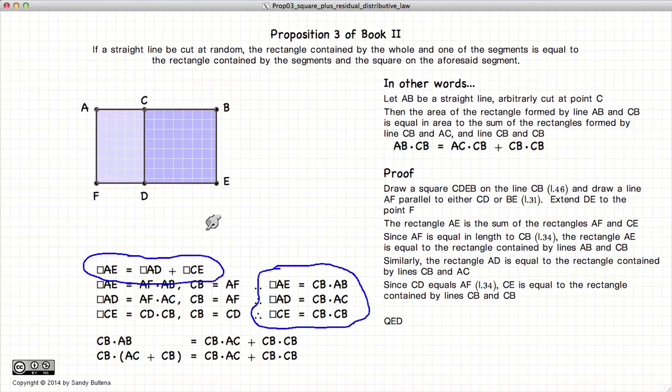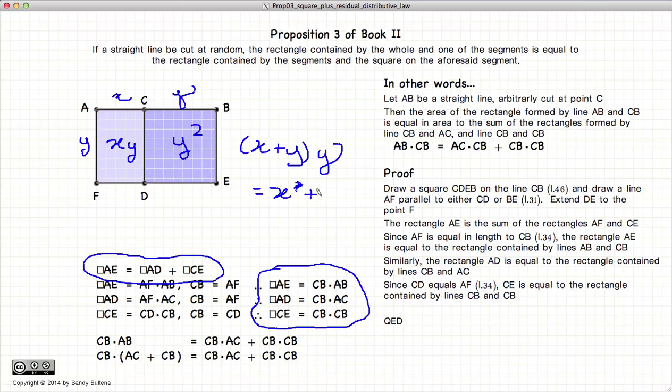And just to recap, if this is length X and this is length Y, this is Y squared, this length is Y, and this is XY. So X plus Y times Y is equal to XY plus Y squared.